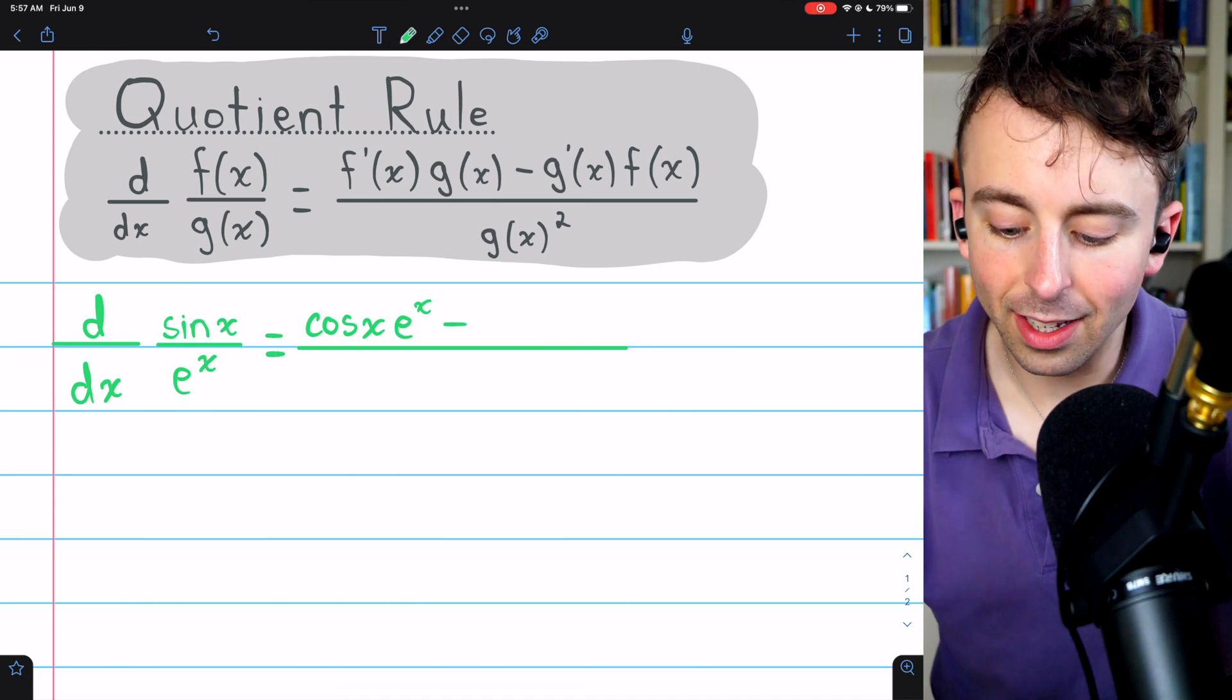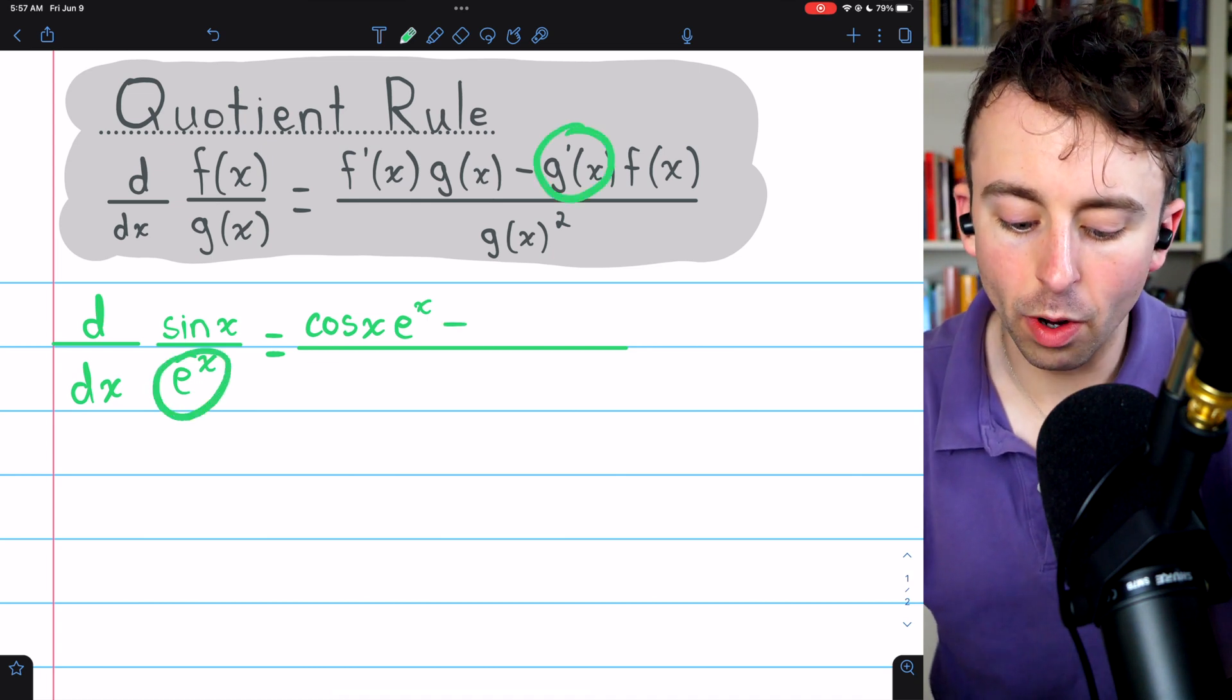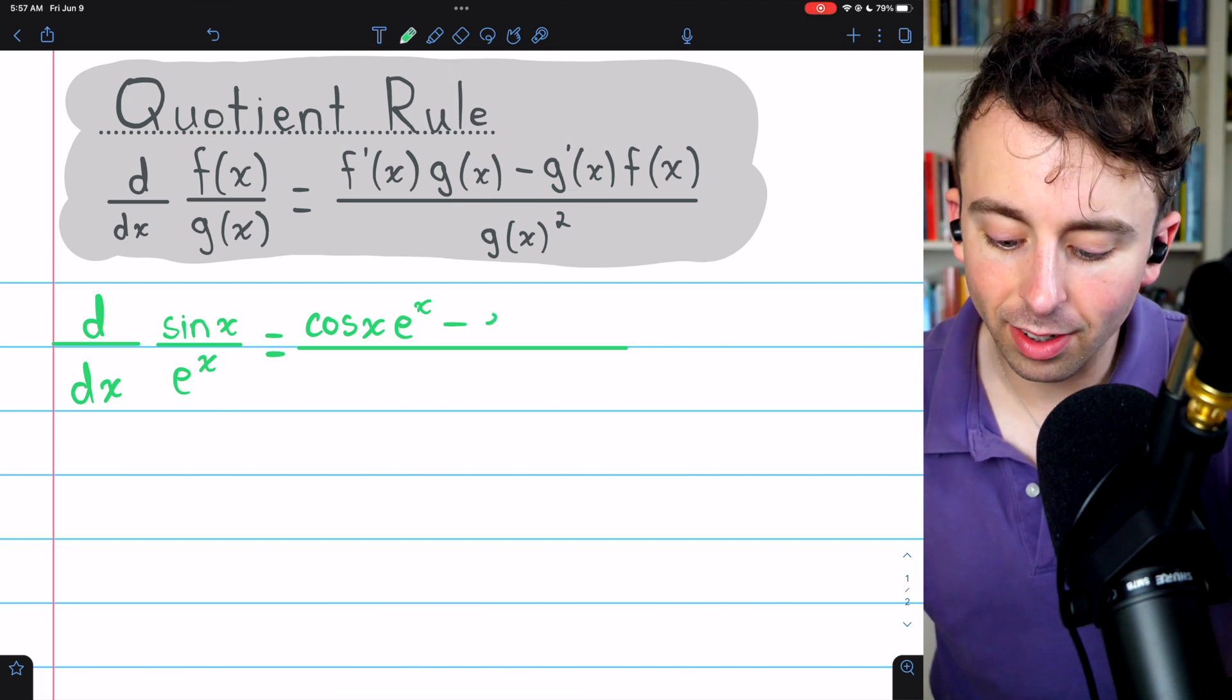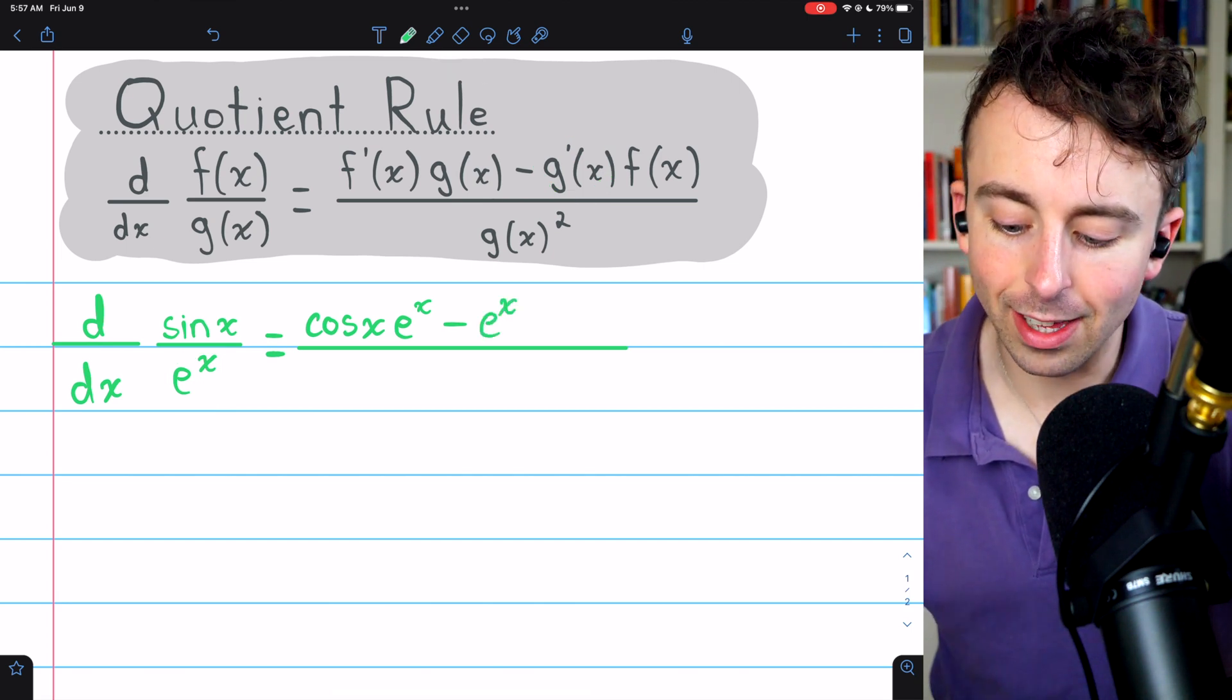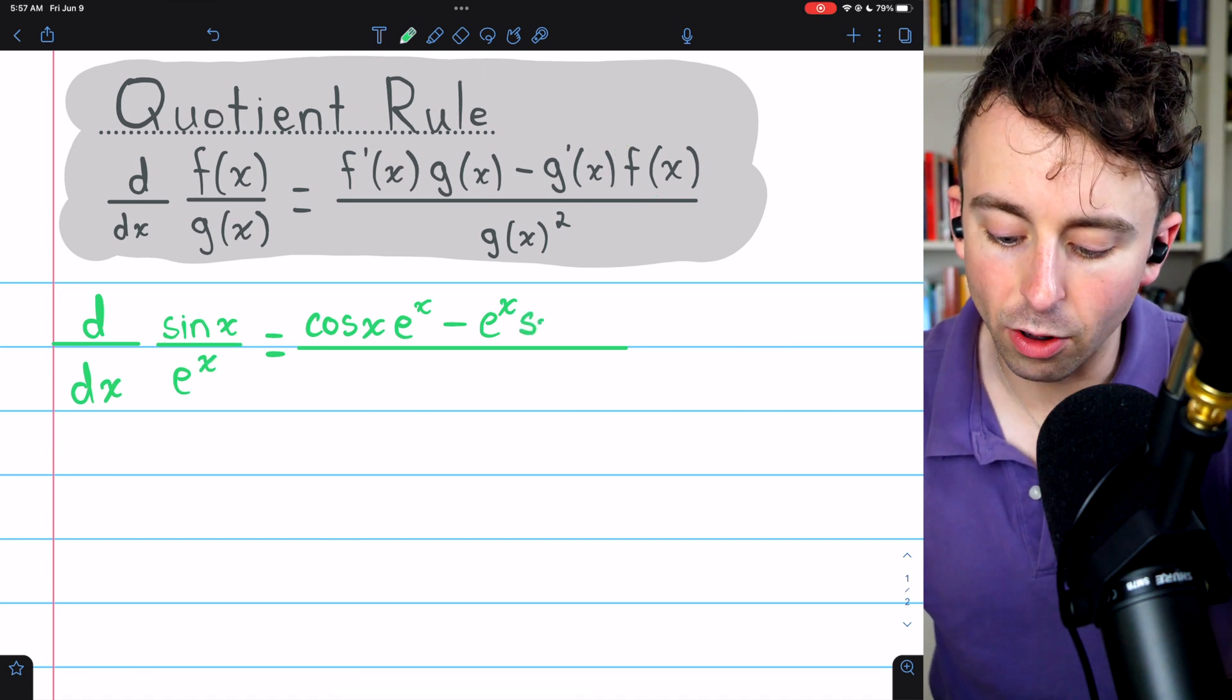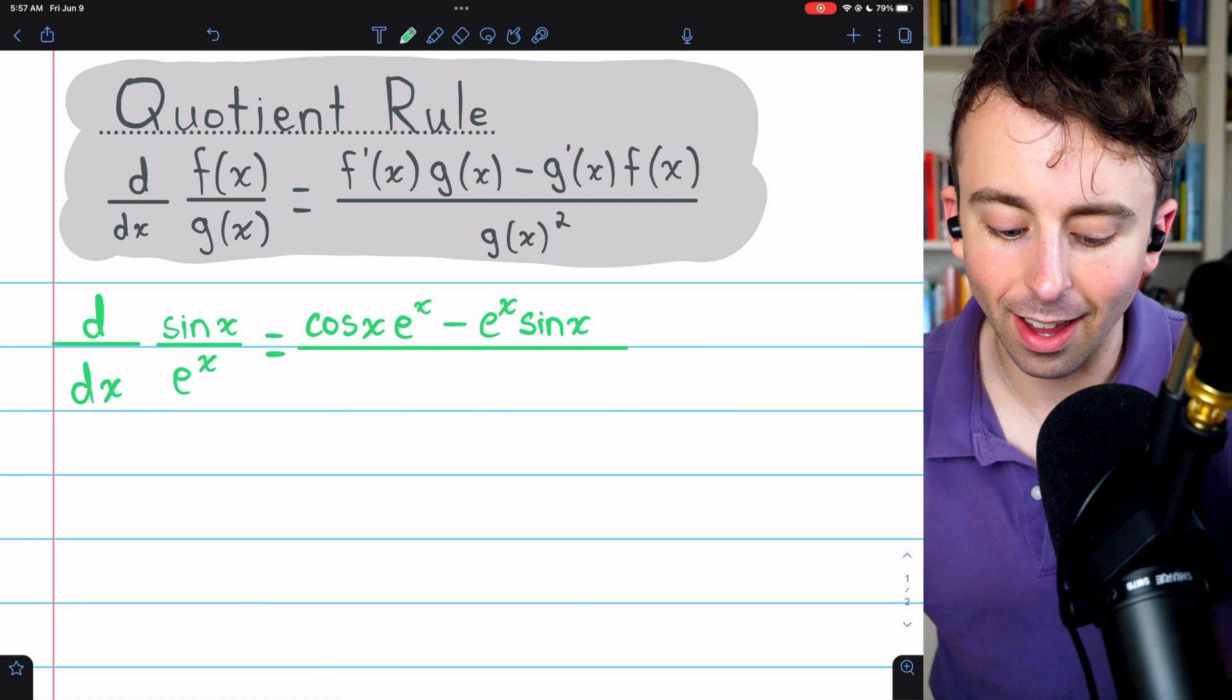Then subtract g prime of x, the derivative of the denominator. The derivative of e to the x is just e to the x, so minus e to the x, and that needs to get multiplied by f of x, which is the numerator, so multiply by sin x.